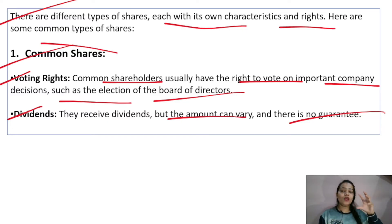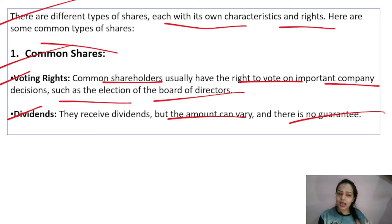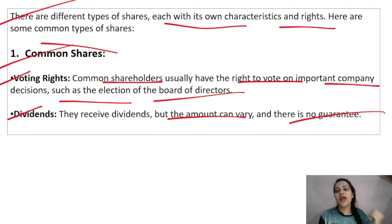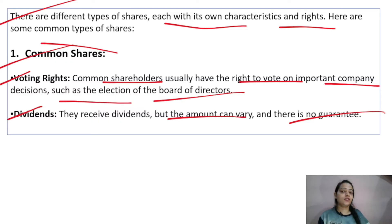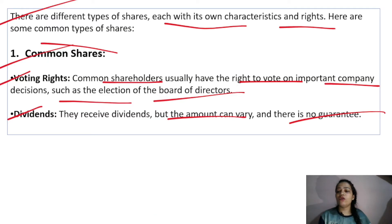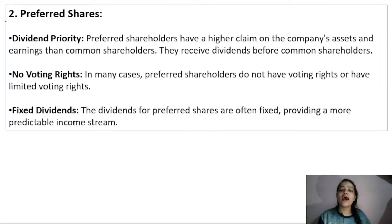When the company makes a profit, it is distributed in the form of dividends. If you have common shares, you can get dividends, but the amount is not fixed — it can vary depending on how much profit the company makes. So remember: common shareholders have voting rights in important decisions, and they receive dividends whose amount can vary.